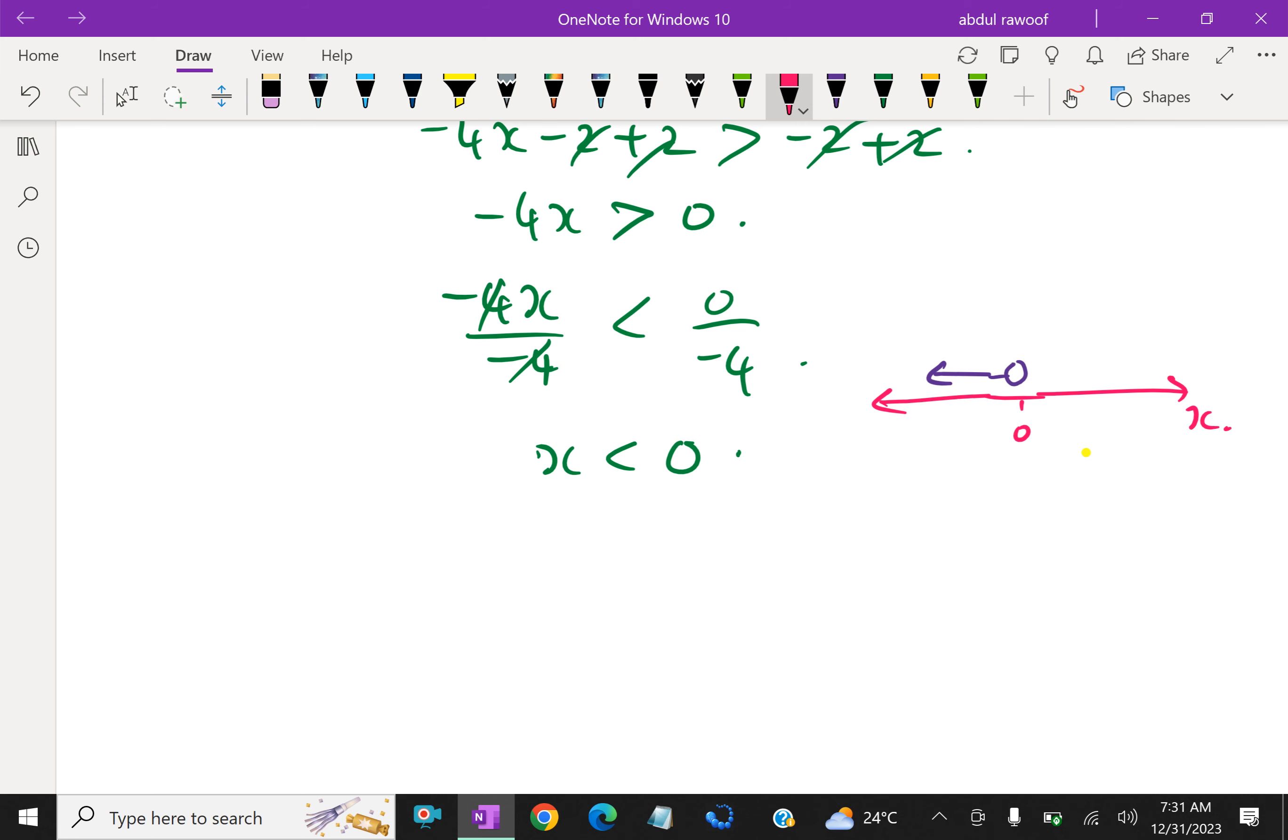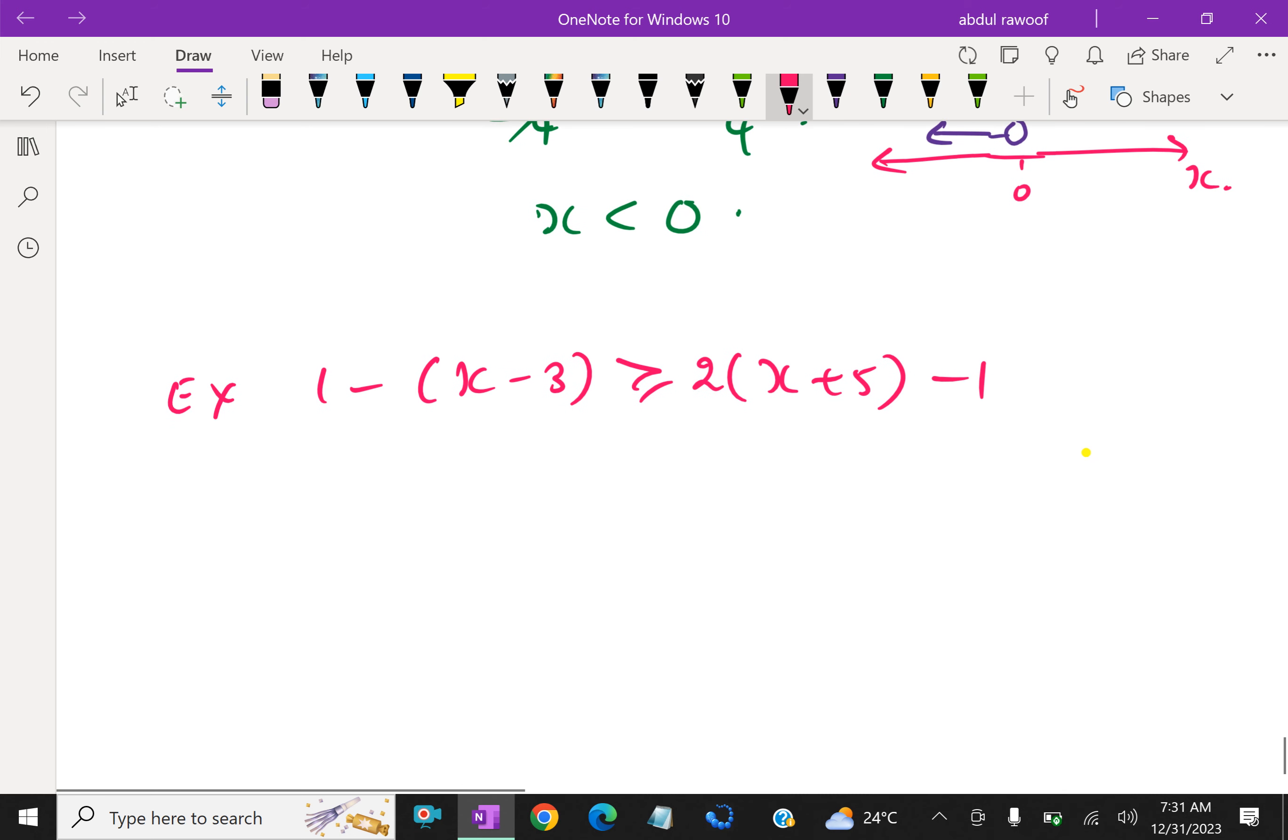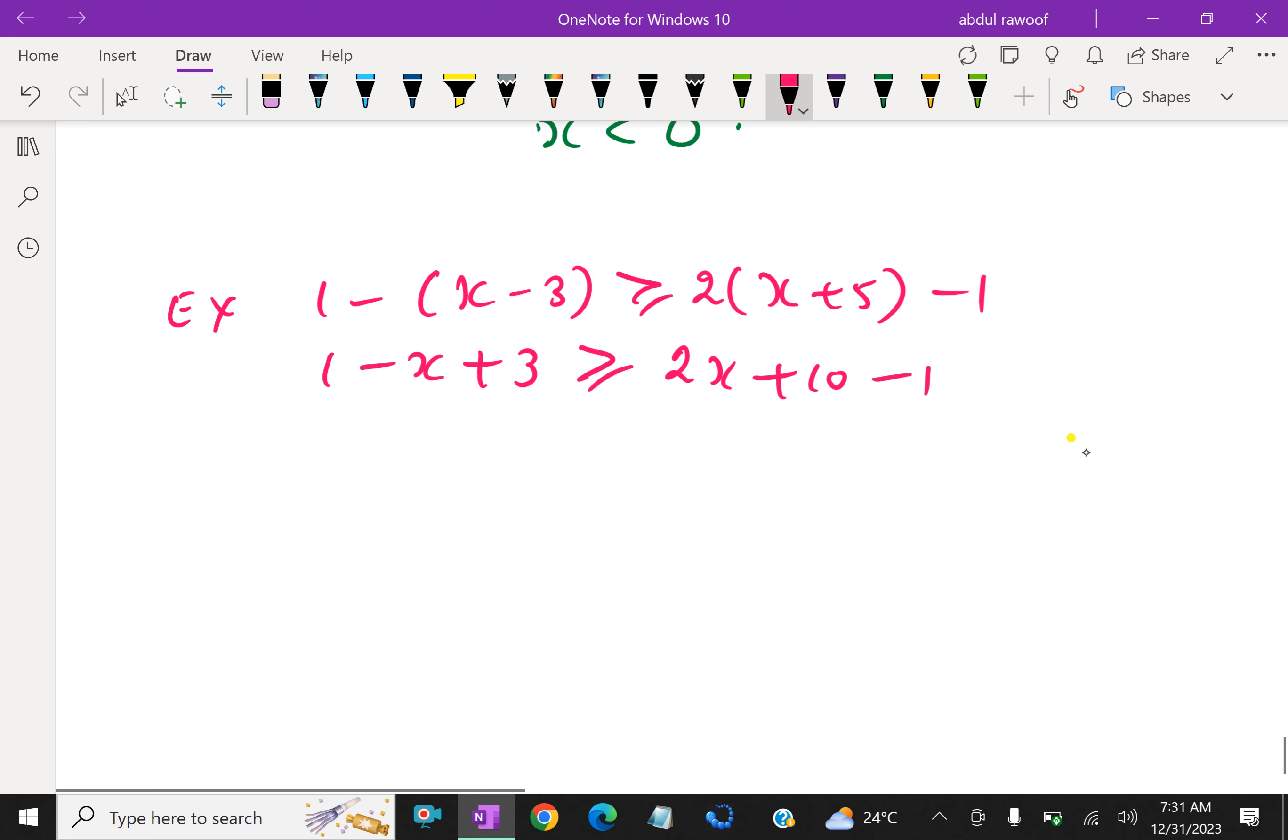One more example. 1 minus x minus 3 is greater than or equal to 2x plus 10 minus 1. Same, first here 1 multiplied with this, minus x minus times minus is plus 3. 2x plus 10 minus 1. Simplifying, 1 plus 3 is 4. 4 minus x is greater than or equal to 2x plus 9.